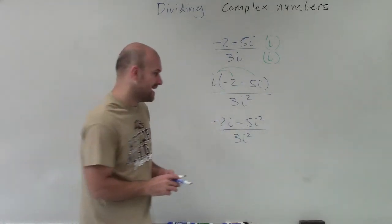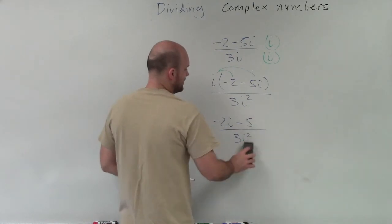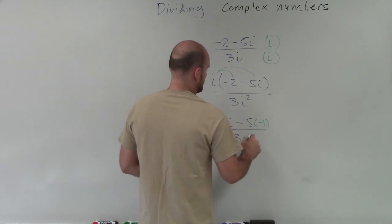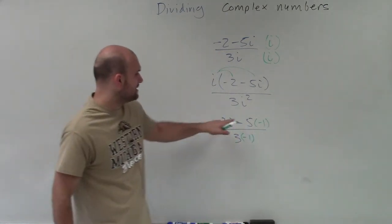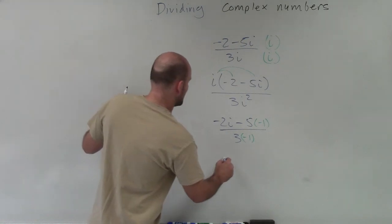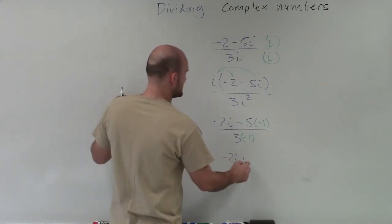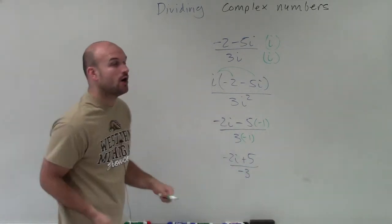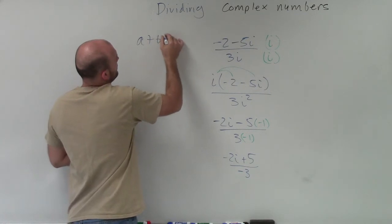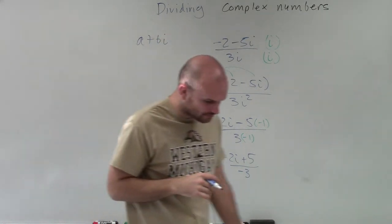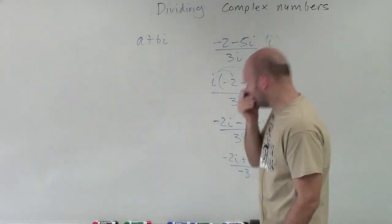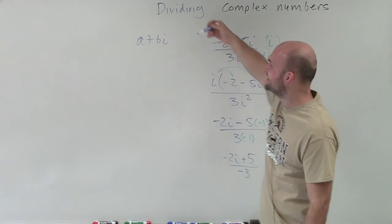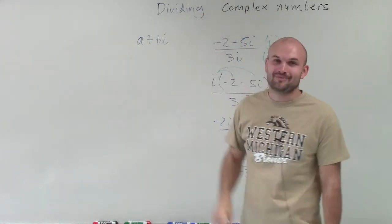Now I'm going to replace my i squared with negative 1, because for our imaginary unit, i squared equals negative 1. So we have negative 2i. Negative 5 times negative 1 is positive 5. And 3 times negative 1 gives us divided by negative 3. Remember, we always want to write our simplified version in a plus bi format.